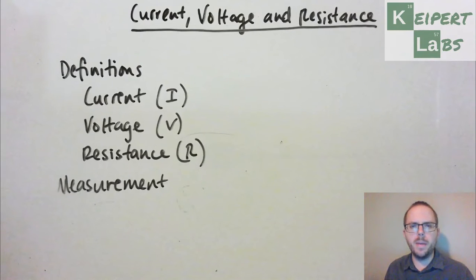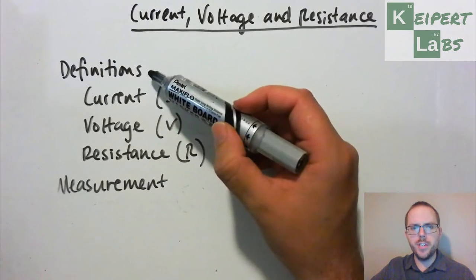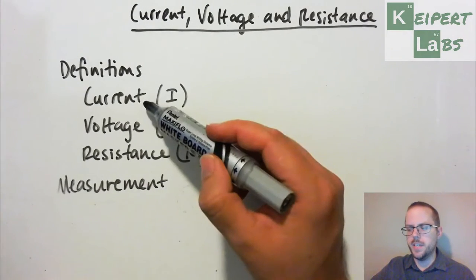Hi everyone, welcome to this episode of Kuypert Labs talking about current, voltage and resistance. Three of the fundamental properties or things that we can know about an electrical circuit and then we're going to spend a little bit of time looking at each one.